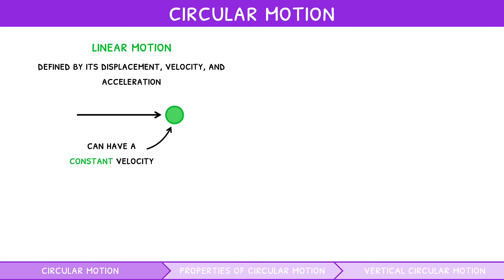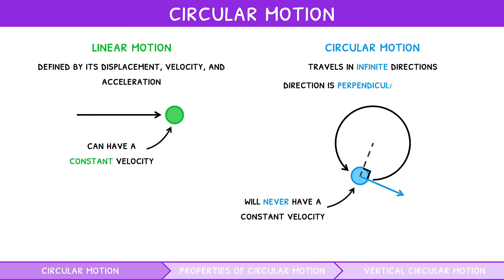However, an object travelling in a circular path, as in circular motion, travels in infinite directions, and so it will never have a constant velocity. It is important to recognise the direction of travel of an object at any point in its circular path is perpendicular to the circle.